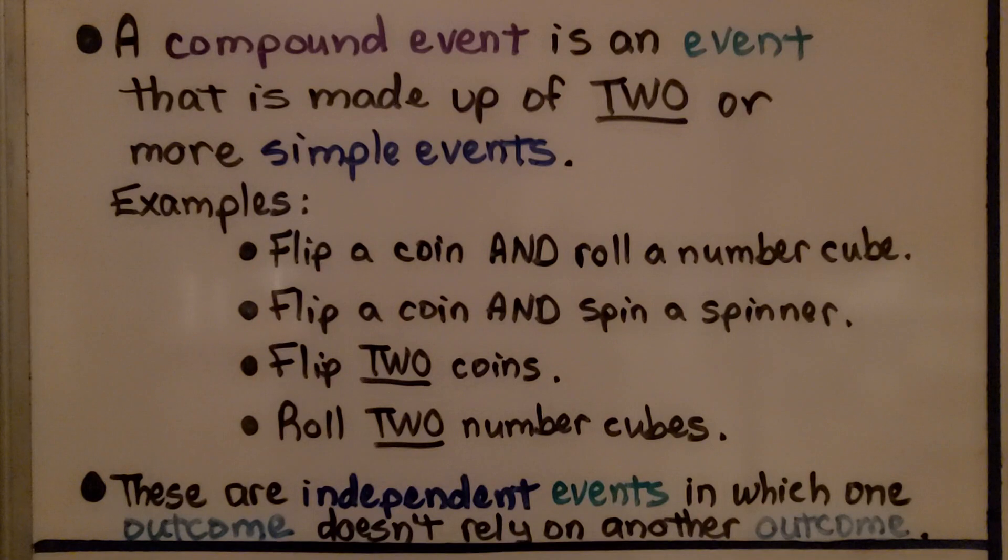So far we've learned a compound event is an event that is made up of two or more simple events. Examples of compound events would be flip a coin and roll a number cube, flip a coin and spin a spinner, or flip two coins or roll two number cubes. These are independent events in which one outcome doesn't rely on another outcome.